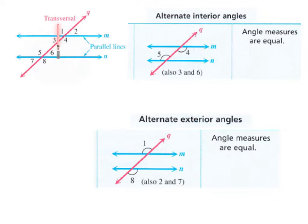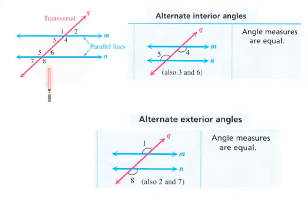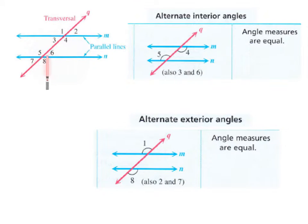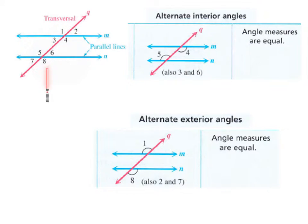We have vertical angles at one and four, and two and three — one and four being the obtuse angles, two and three being the acute. The angles on the other intersection also have an acute and an obtuse, assuming the transversal isn't perpendicular to the parallel lines — in that case they're all 90 degrees. Otherwise, all four acute angles are congruent. So angles 1, 4, 5, and 8 are congruent, and angles 2, 3, 6, and 7 are congruent.